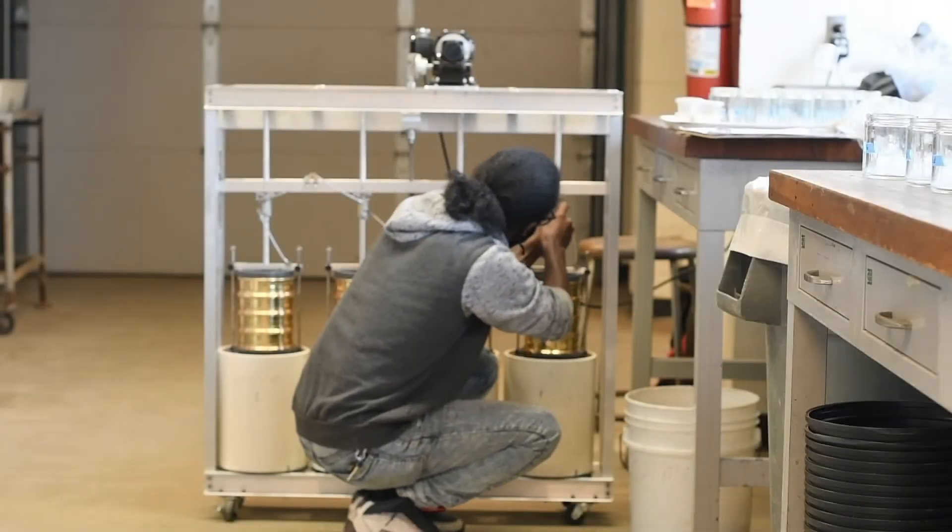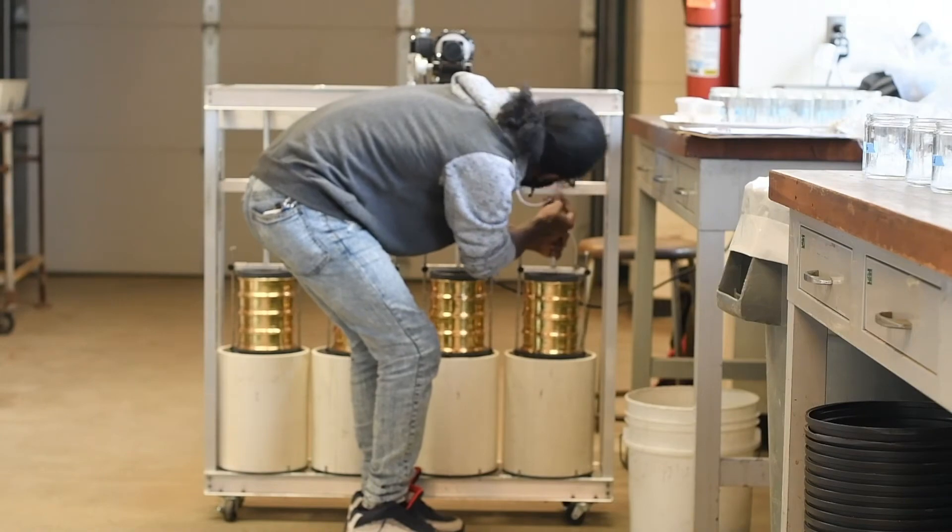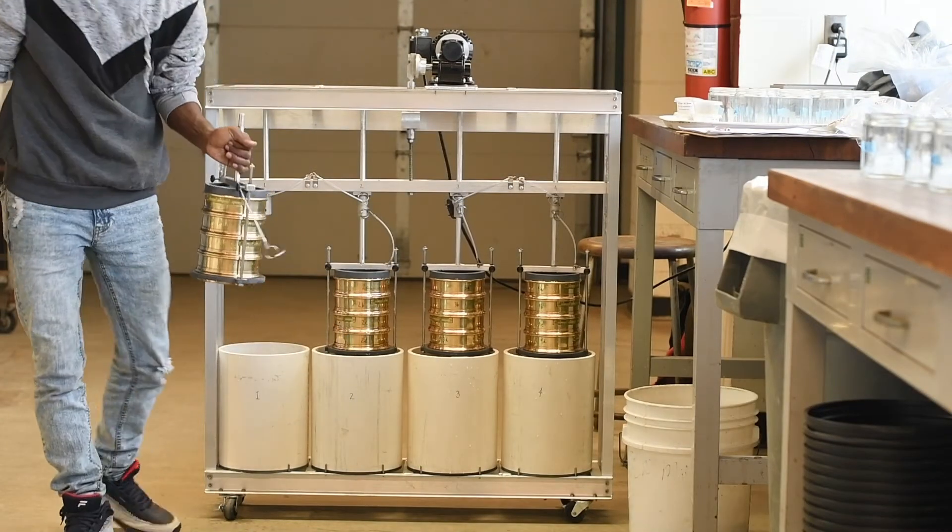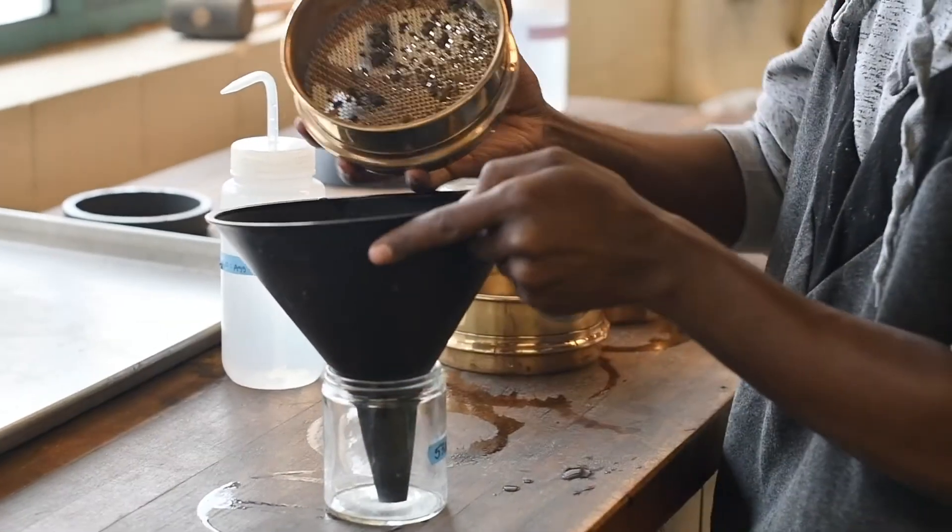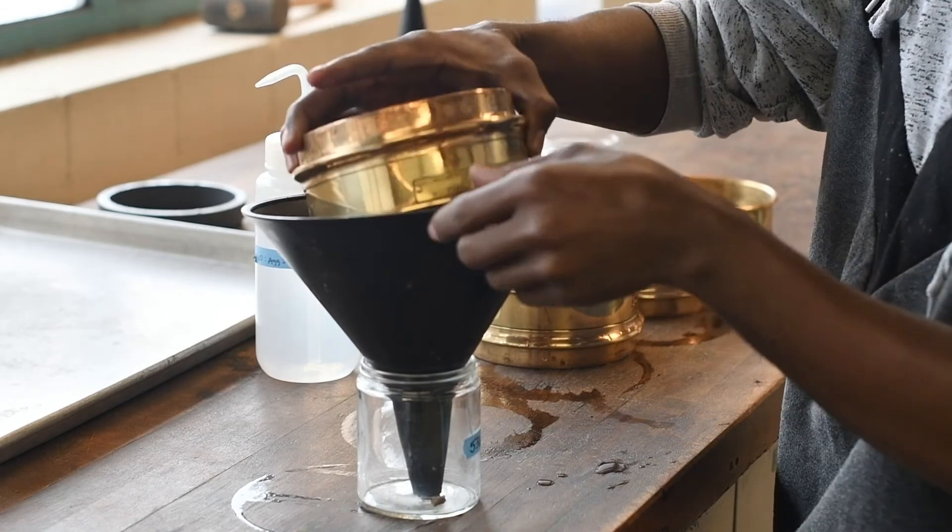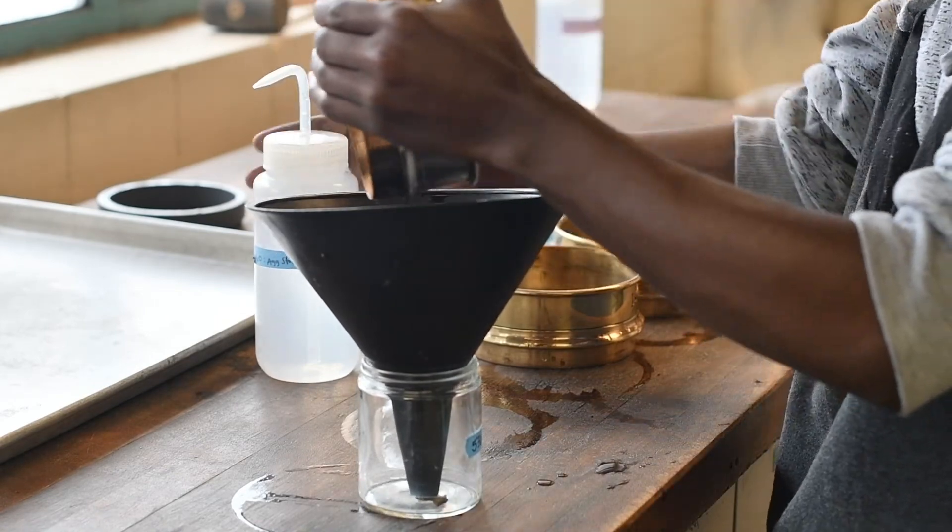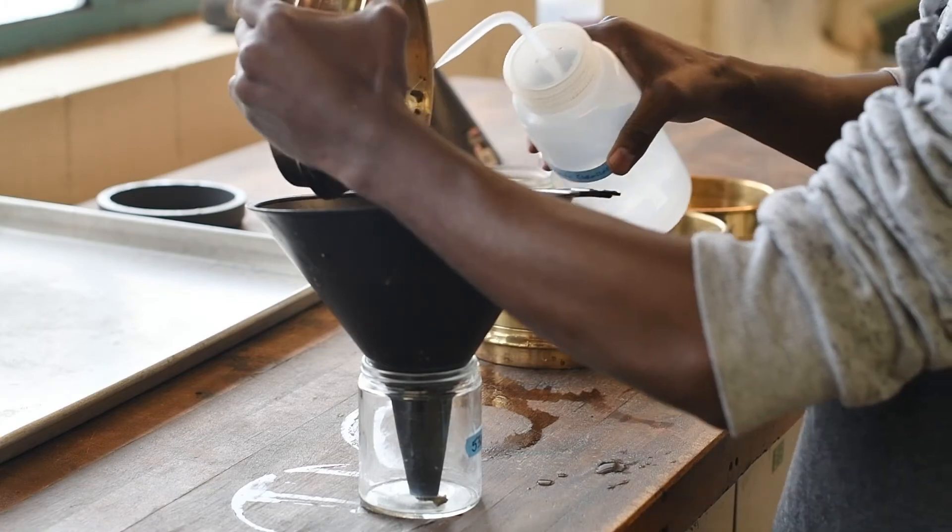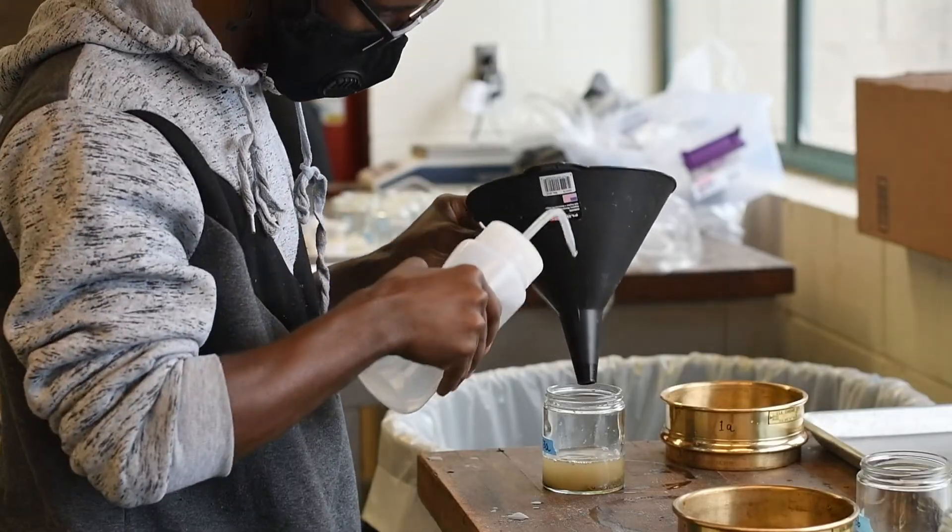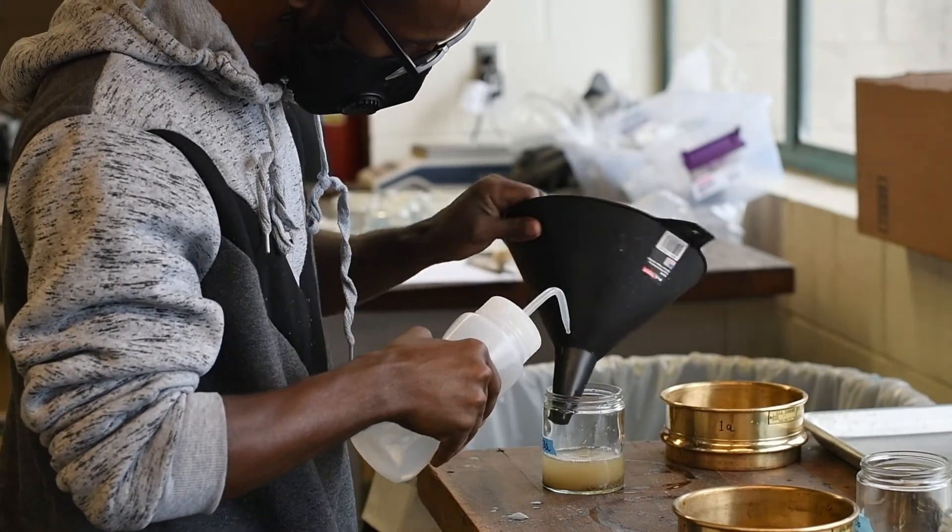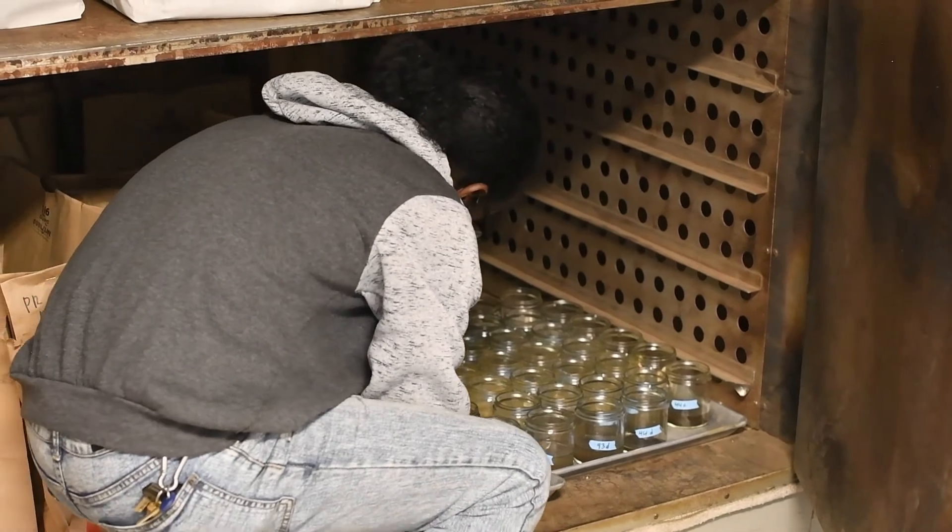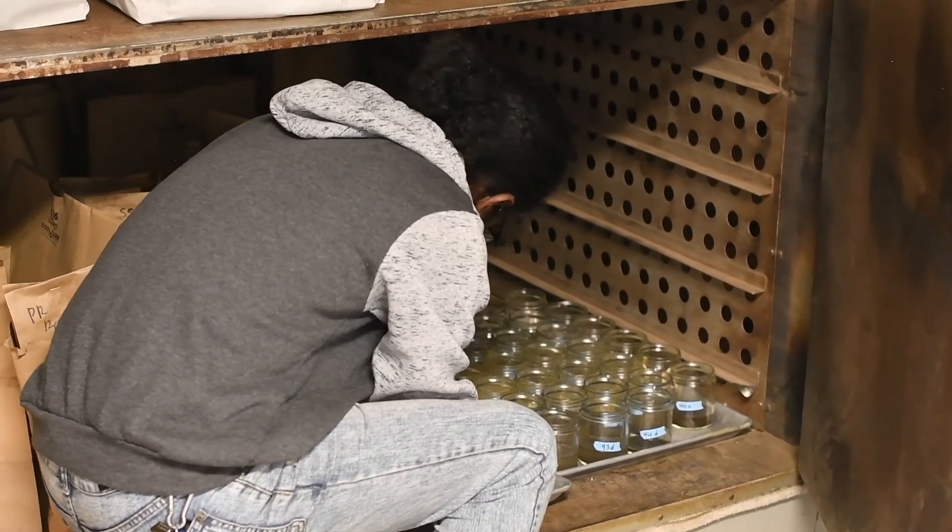When the timer goes off, raise the sieve stacks out of the drums and allow them to drain. Remove one stack at a time and collect the material in each sieve by turning it upside down and tapping it into a funnel over a small glass jar. Make sure you label and weigh the jar ahead of time. Use a wash bottle filled with DI water to collect any remaining material into the jar. Make sure you've properly rinsed any material on the funnel into the jar as well. Then, set the jars in a drying oven until they are completely dry, which may take 24 to 36 hours.